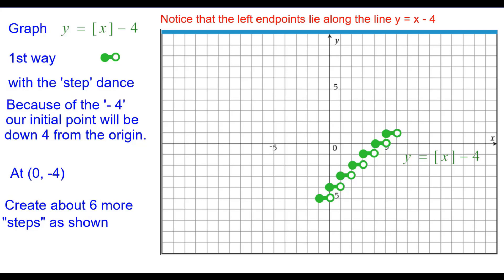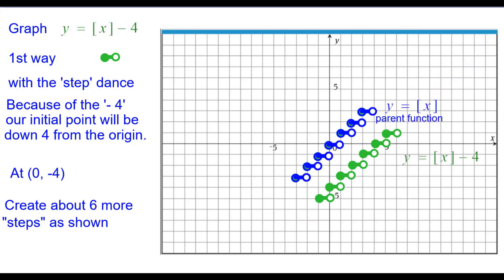Please notice that the left endpoints, the colored endpoints, lie along the line y equals x minus 4. Also notice that the graph is 4 below the parent function. Every single point is down 4.